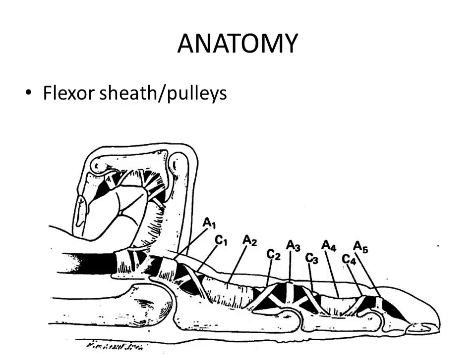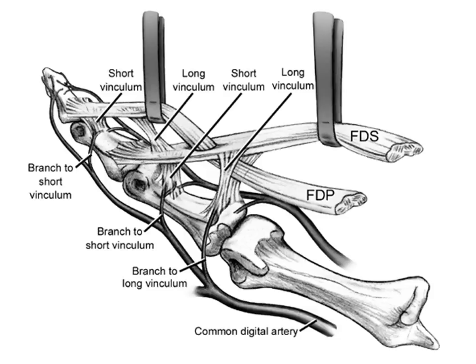In full flexion, all the annular pulleys will come to touch each other as the cruciform pulleys collapse. In this diagram, you can see very clearly the two tendons and how Camper's chiasma allows the FDP to transition from a deeper structure to the more superficial position.